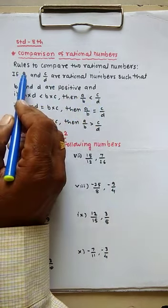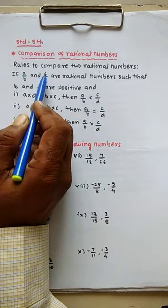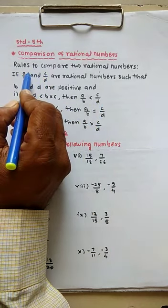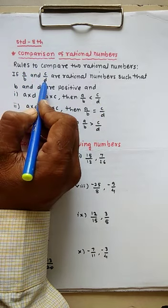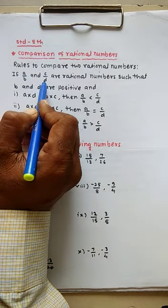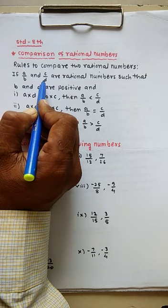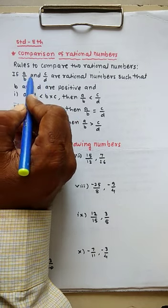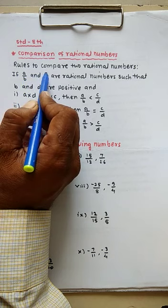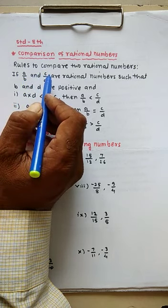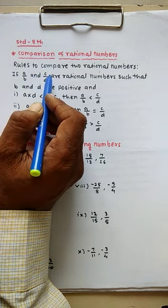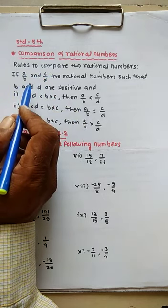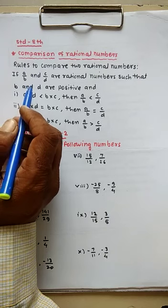Two rational numbers are A divided by B and C divided by D. Cross multiply: A multiplied D. If A multiplied D is greater than C, then the first rational number is greater. If A multiplied D is less than B multiplied C, then the second rational number is greater. If A multiplied D equals B multiplied C, then the two rational numbers are equal.